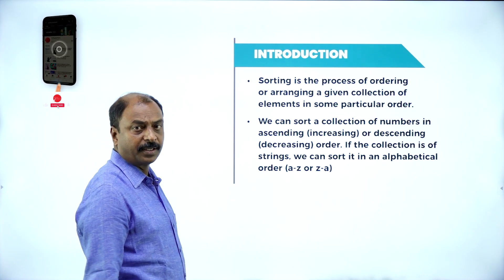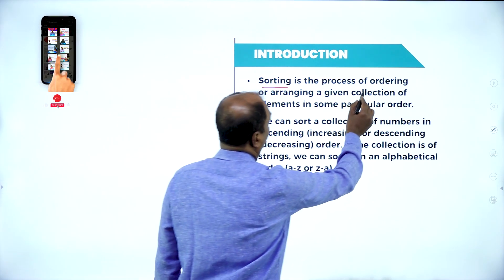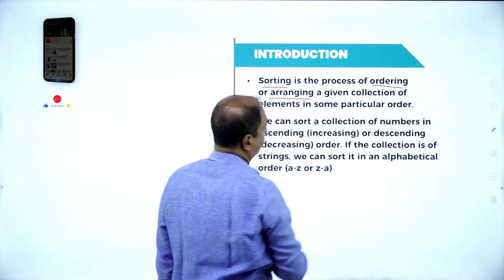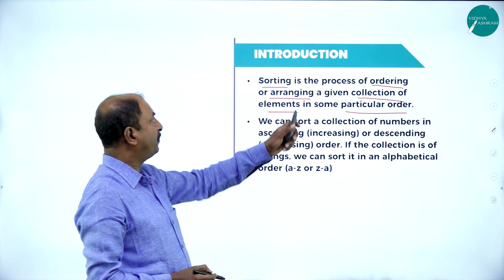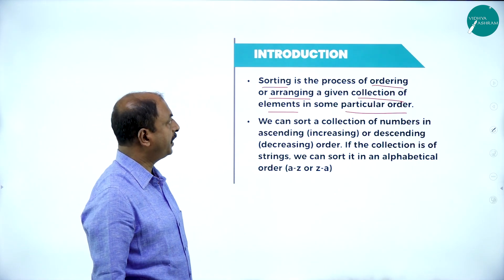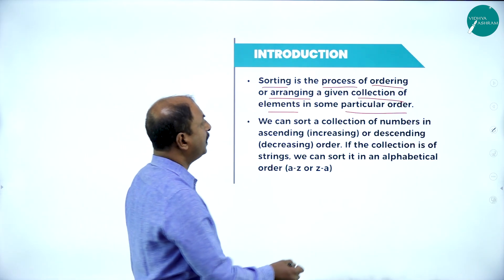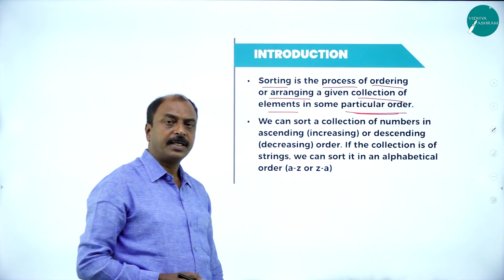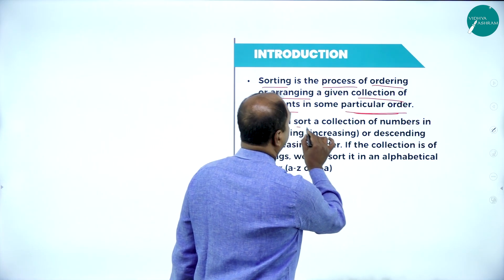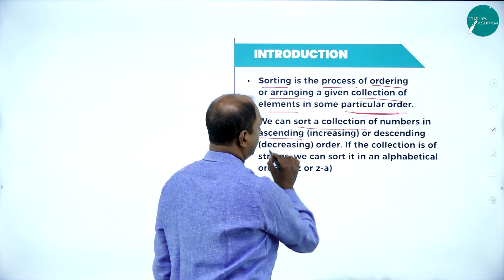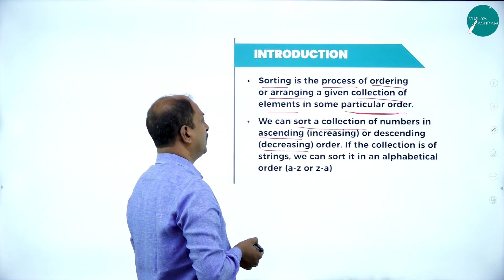What is sorting? Sorting is the process of ordering or arranging a given collection of elements in some particular order. It is a process of arrangement of given elements in a particular order. If I say a particular order, it can be either ascending order or descending order. We can sort a collection of numbers in ascending order, another name is increasing order, or descending order, another name is decreasing order.